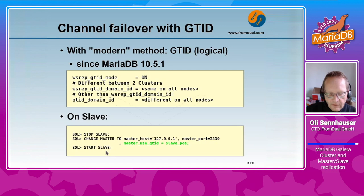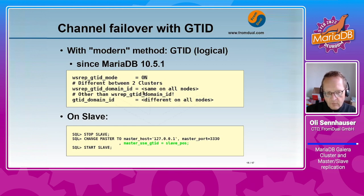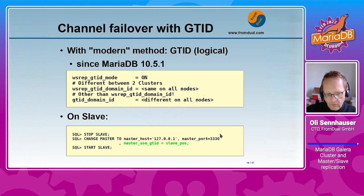Now, channel failover with Global Transaction ID (GTID) is much more modern and works since MariaDB 10.5. Preparation required: `wsrep_gtid_mode` must be enabled on all nodes; `wsrep_gtid_domain_id` needs to be the same on all nodes within one cluster but different between two clusters; and `gtid_domain_id` should be different on all nodes and different from `wsrep_gtid_domain_id`. With GTID, channel failover is simple: stop slave, then `CHANGE MASTER TO new_master, MASTER_USE_GTID=slave_pos`, then start slave. With GTID, this becomes much easier.